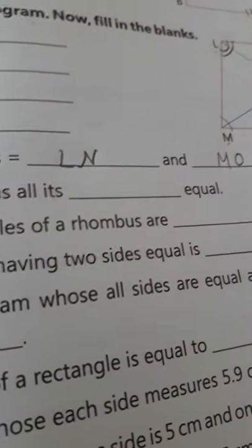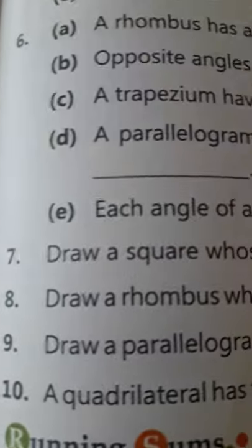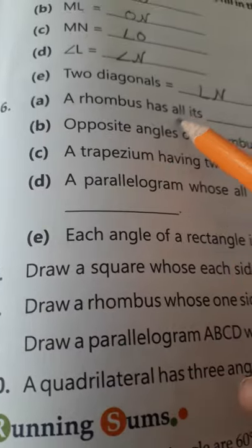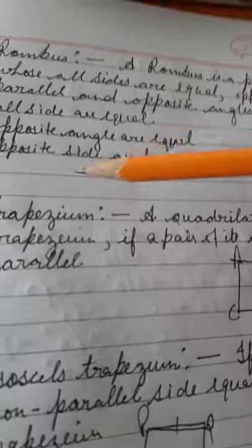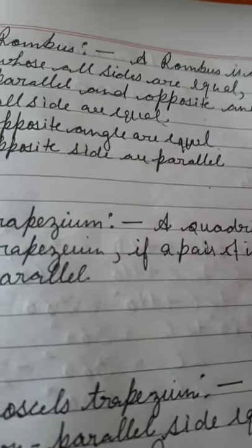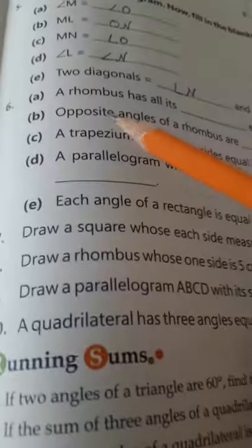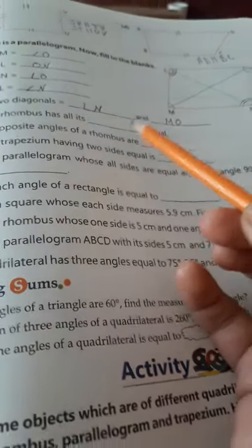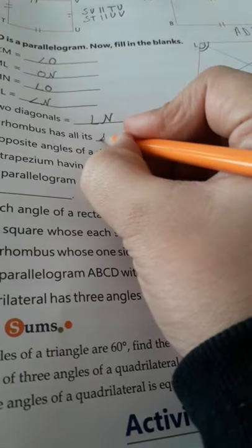Hamein just batana hai jo humne basic concept kiya tha — quadrilaterals ke baare mein. Humne rhombus, trapezium, parallelogram — in sabke baare mein study kiya tha na. Uss se kuch questions put hain, hamein fill karna hai. First, dekhiye — a rhombus has all its dash equal. Humne rhombus ke baare mein study kiya tha — rhombus hoti kya? Iske all sides equal hoti hain. Opposite angles equal hoti hain. Opposite sides parallel hoti hain. Toh question mein kya put karenghe — rhombus has all its sides equal. Hum write karenge: sides.